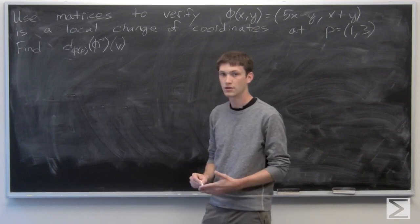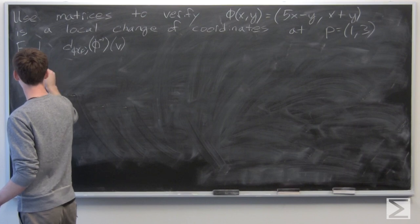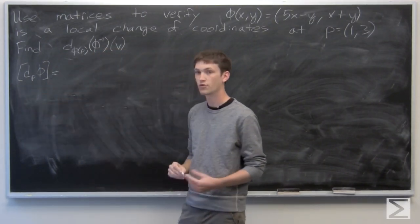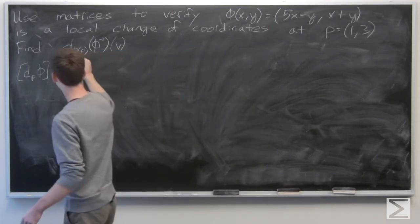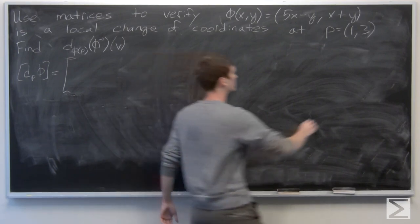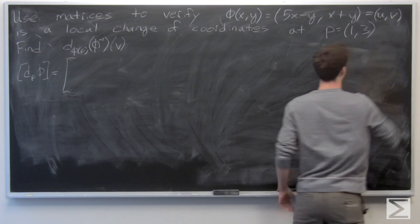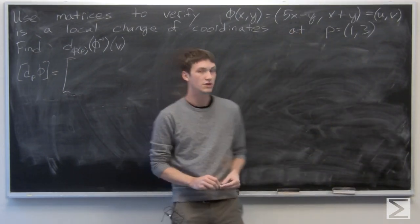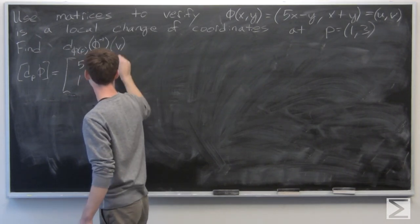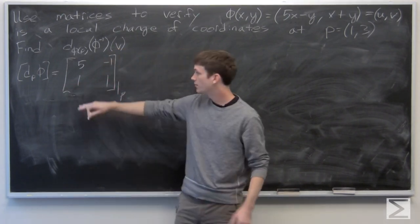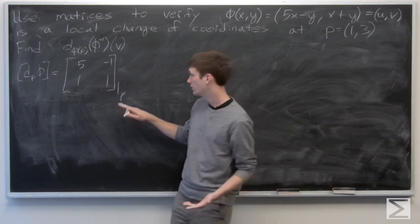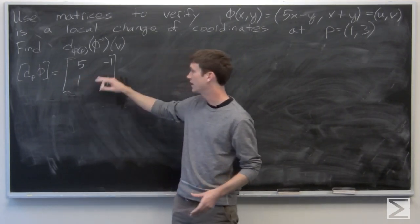First, we're going to calculate the Jacobian matrix, which has the gradients of the component functions as its rows. Letting the components be u and v, the partial derivative of u with respect to x is 5, and with respect to y is negative 1. The partial derivatives of the second component with respect to x and y are both 1.